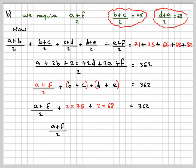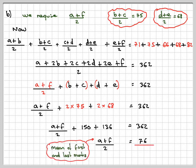Then we're going to have (A+F)/2 + 150 + 136 = 362, which means (A+F)/2 = 76. This is the mean of the first and the last marks.